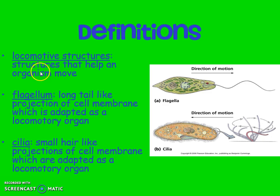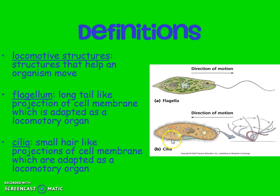You're going to see the word 'locomotive' especially on the end-of-grade test. Locomotive means to move — these are things that the organism has to help it move. Like our locomotive structures — we use our feet. But these organisms have the flagellum and cilia. The flagellum is this long tail right here, and it helps the organism to move — this is actually a euglena. Cilia are small hair-like projections. Cilia is on a paramecium, which is what this is right here. So flagella is the big long tail, and cilia are the little hairs.